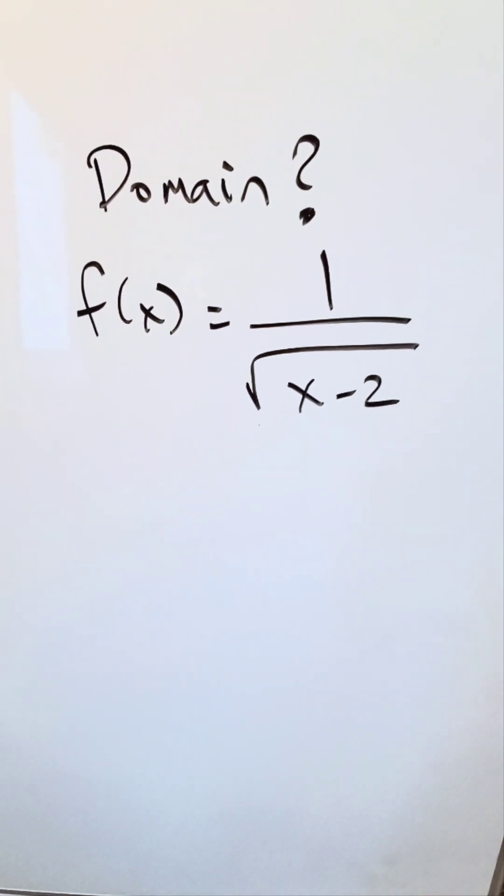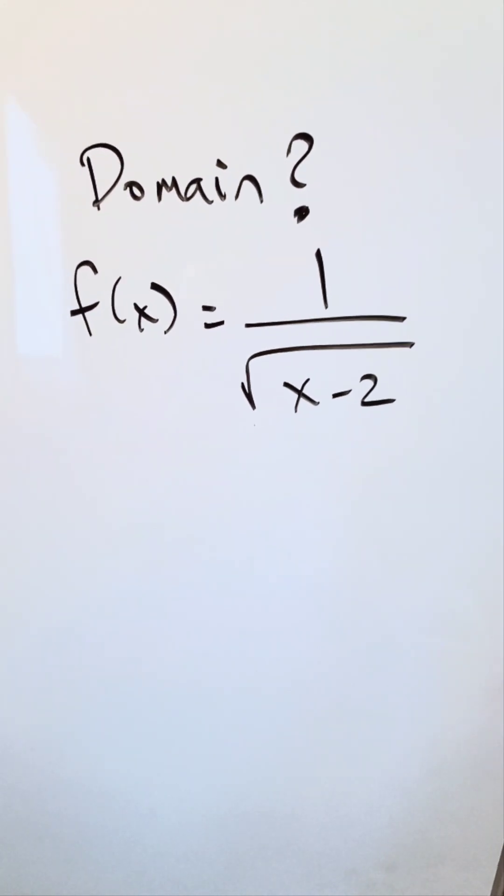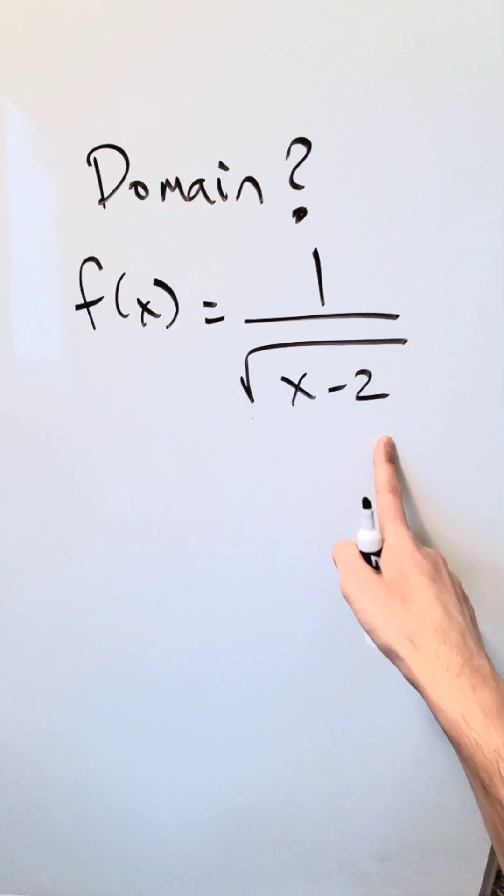Let's evaluate this function and determine its domain. f of x is equal to 1 divided by square root x minus 2.